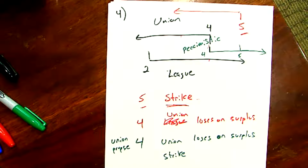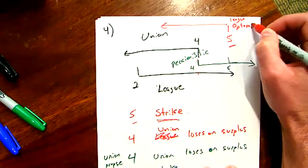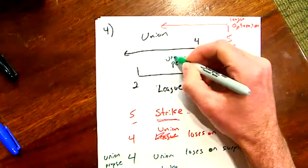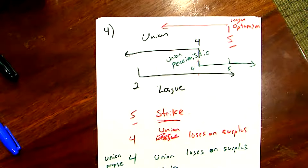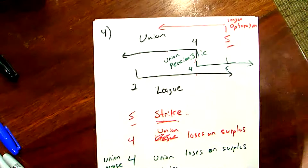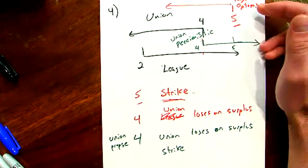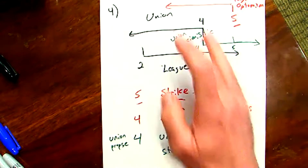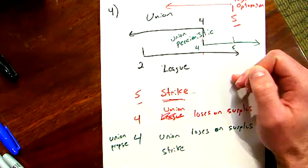Let me clarify from the chat: what I labeled was league optimism — the league had an optimistic view of the union's threat point, thinking it was five when the true value was four. Conversely, the union had a pessimistic view of the league. So it's really: party one has optimism about party two's beliefs, or party two has pessimism about party one's beliefs.